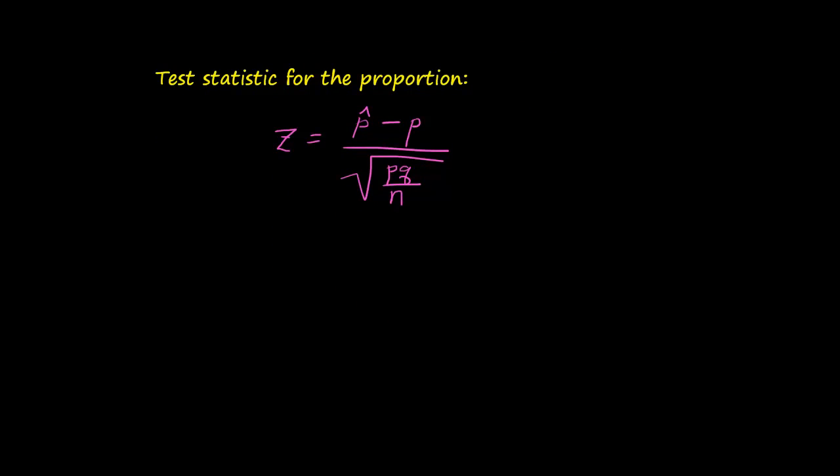Recall that we've talked about comparing the test statistic to the critical value. That's one way we make a decision and draw conclusions in a hypothesis test based on the results of your test. As you can see, the p-hat is involved. The p is your proposed or claimed population proportion, of course, because p is the population proportion.